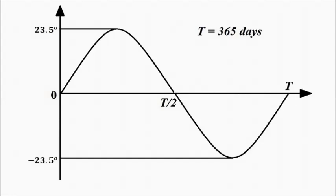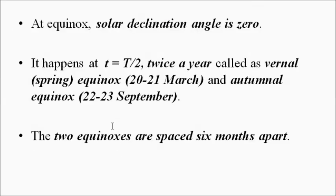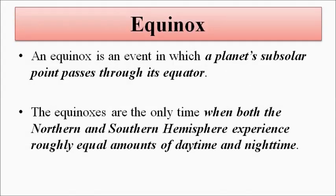Two such times occur when equinox happens: the vernal or spring equinox around March 20–21, and the autumnal equinox around September 22–23. These two equinoxes are separated by 6 months. During equinoxes, both the northern and southern hemispheres experience almost the same amount of day and night time.